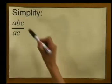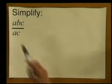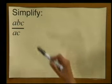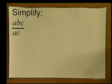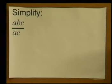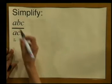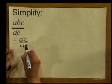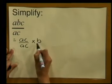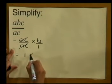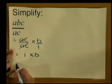Simplify ABC divided by AC. Do you have the answer? Let's see. AC is the common factor in the numerator and the denominator. That means we can divide both the numerator and the denominator by AC. Another way of writing this is AC divided by AC, times B over 1. And we should notice that the AC's cancel out, and we are left with 1 multiplied by B, which gives us B.